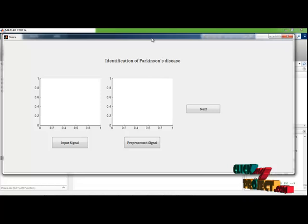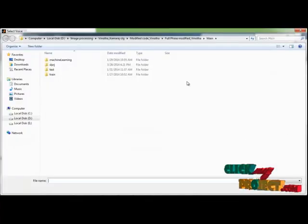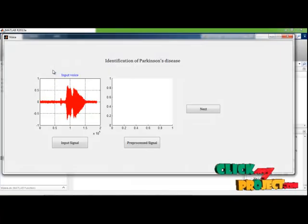This is the GUI window designed for the identification of Parkinson's disease. First, load the input signal. We choose any of the signal from the dataset. Then preprocessing step is executed.